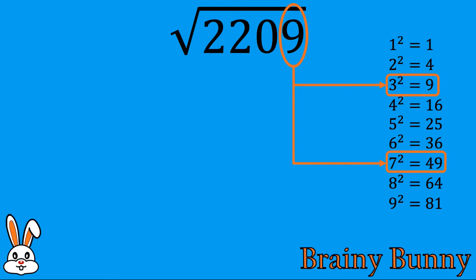For the next step, we find the square of numbers in multiples of 10. For example, 30 squared is 900 and 50 squared is 2500.